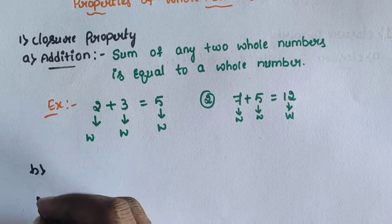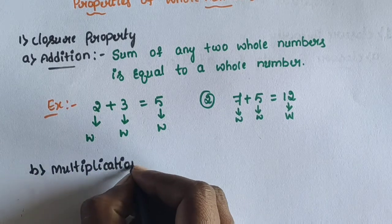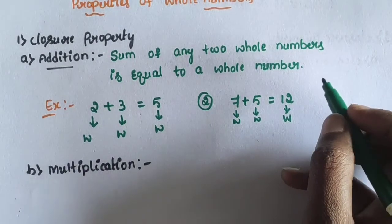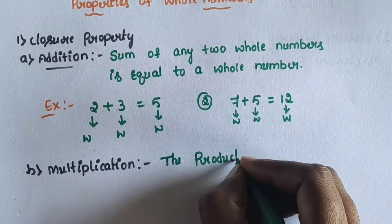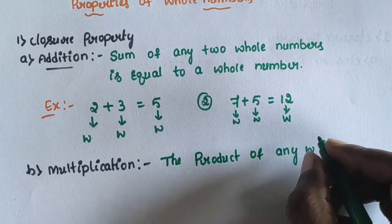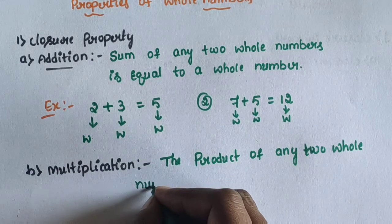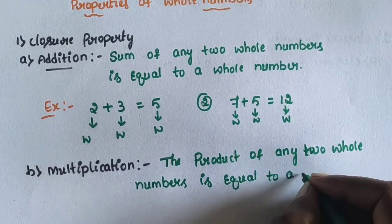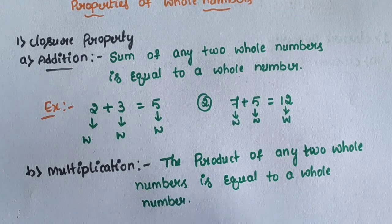Next is the closure property for multiplication. The product of any two whole numbers is equal to a whole number. Then closure property for multiplication is satisfied.